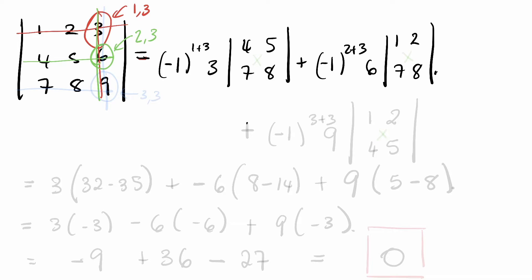Moving further down the column, the element 9 is in the third row and the third column. So we add (-1)^(3+3) times 9, times the determinant of what's left when we erase that row and column — which is det[1, 2; 4, 5].